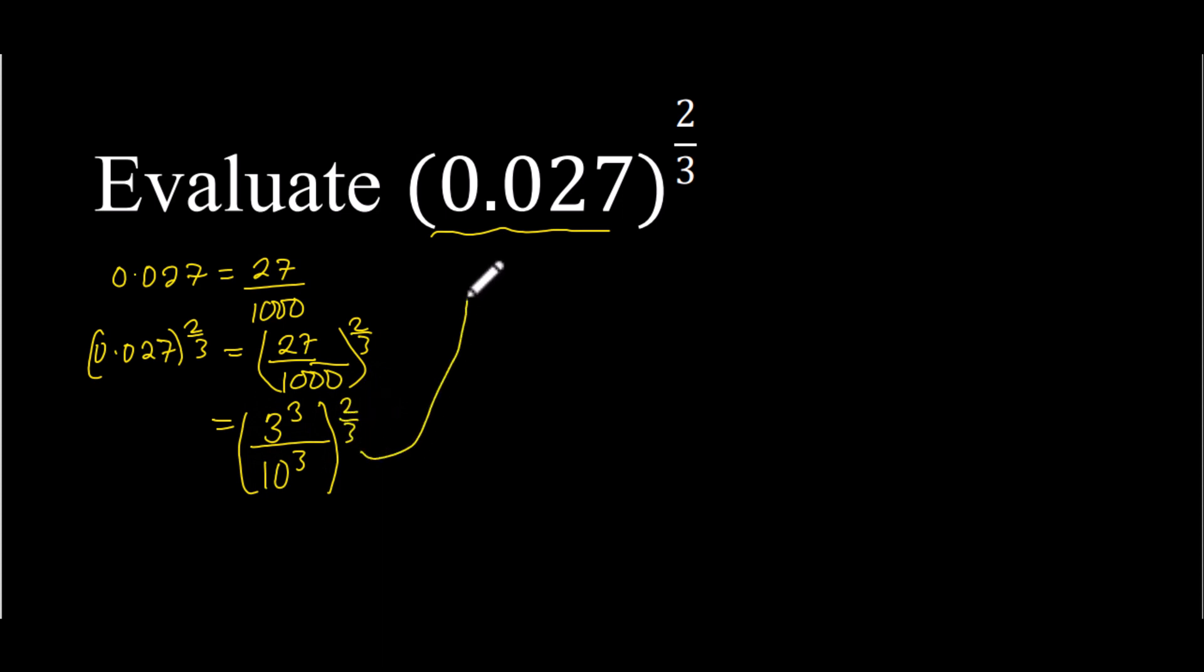Now from the law of indices, if I have a over b all to the power of n, this is given by a to the power of n over b to the power of n.